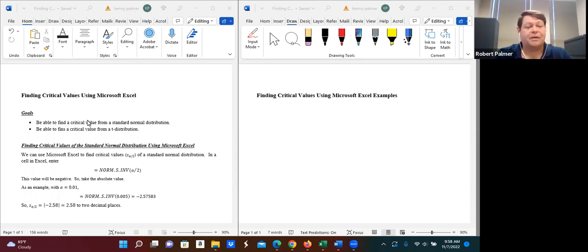So our goal is to be able to find critical values from a standard normal distribution, that's Z of alpha over 2, and then be able to find critical values from a T distribution, that's T of alpha over 2.